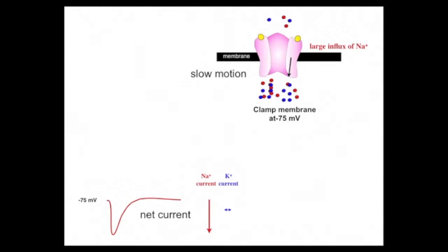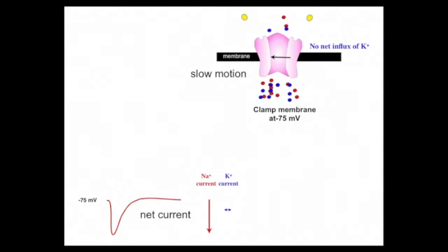Now let's look at potassium. There is no net influx or efflux of potassium ions at minus 75 millivolts because that is the potassium equilibrium potential. There is a large concentration force driving potassium from inside to outside, but there is an equally large electrical force — minus 75 millivolts — attracting potassium back into the cell. Thus, for every potassium ion driven out by the concentration force, one is attracted back in by the electrical force. The driving force on potassium is zero, as indicated by the small blue line with two arrowheads pointing horizontally.